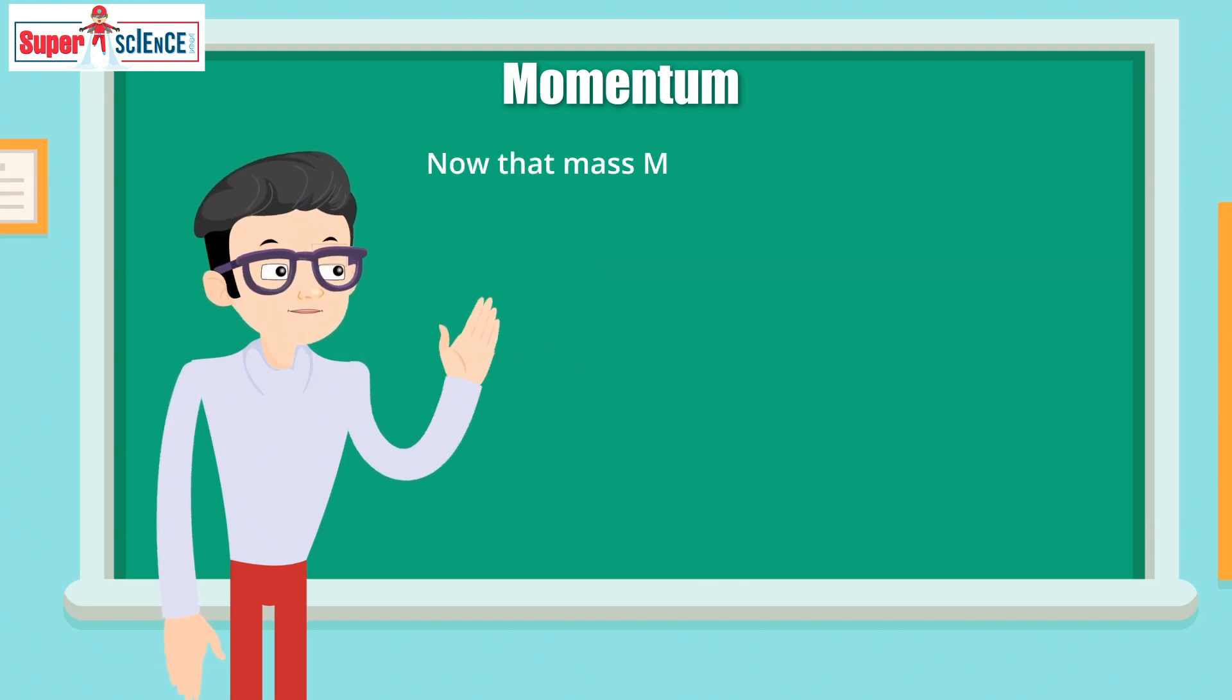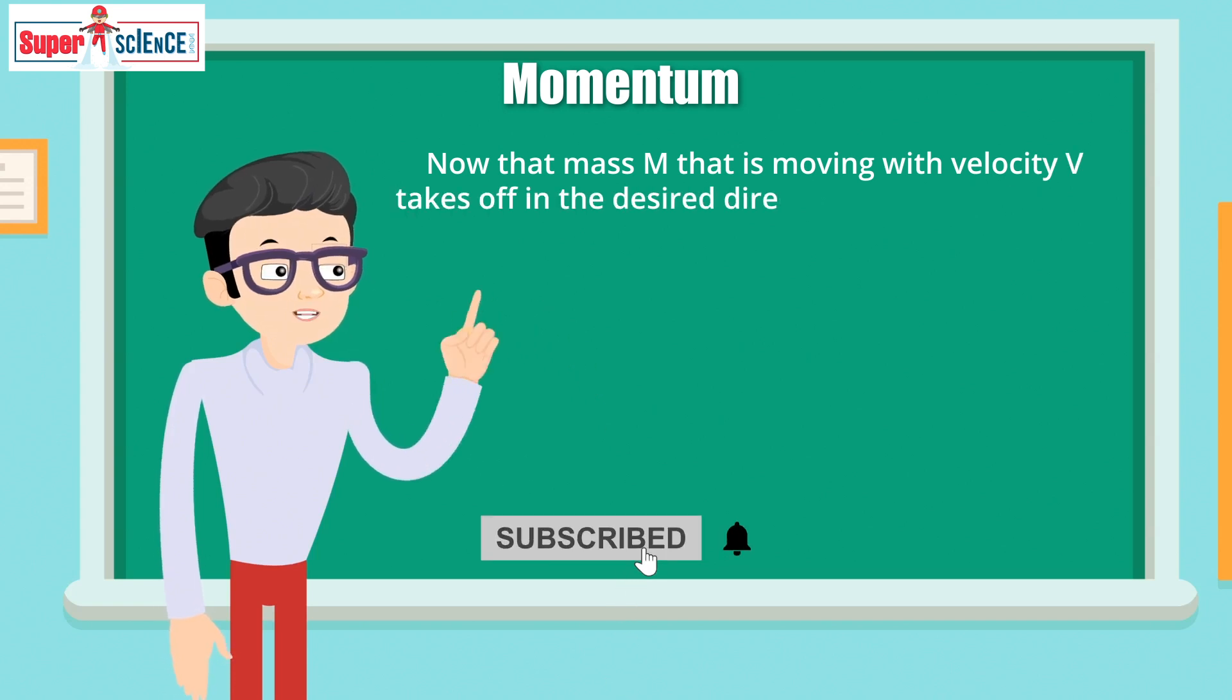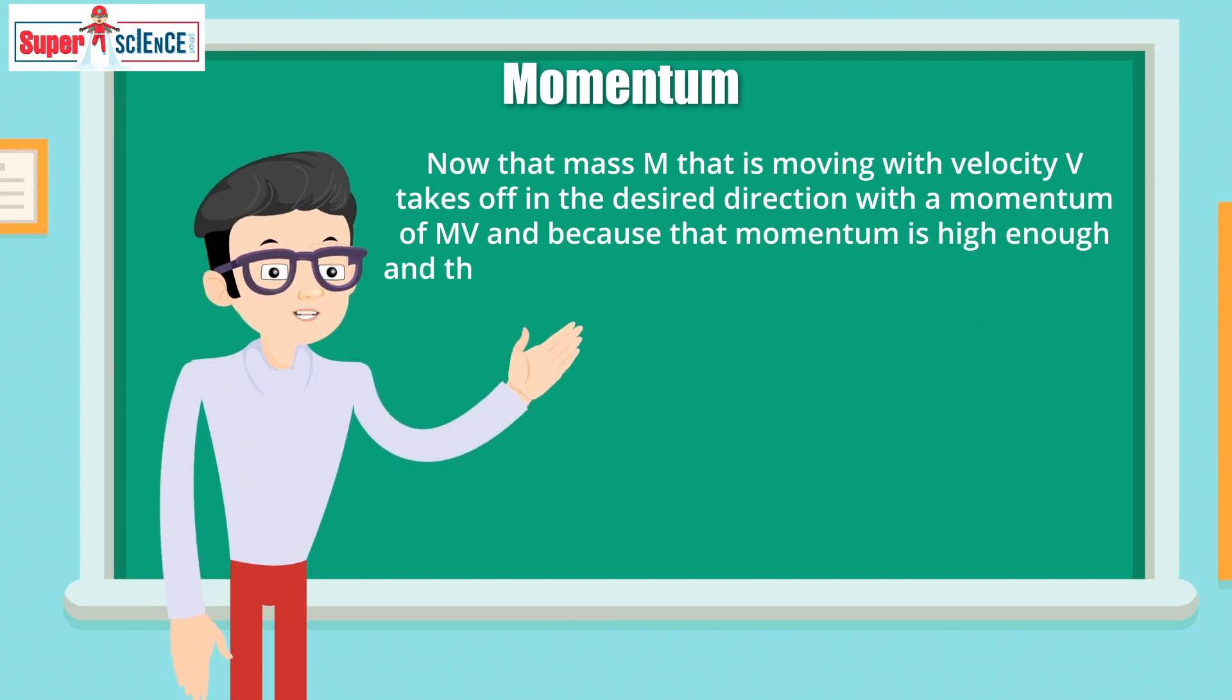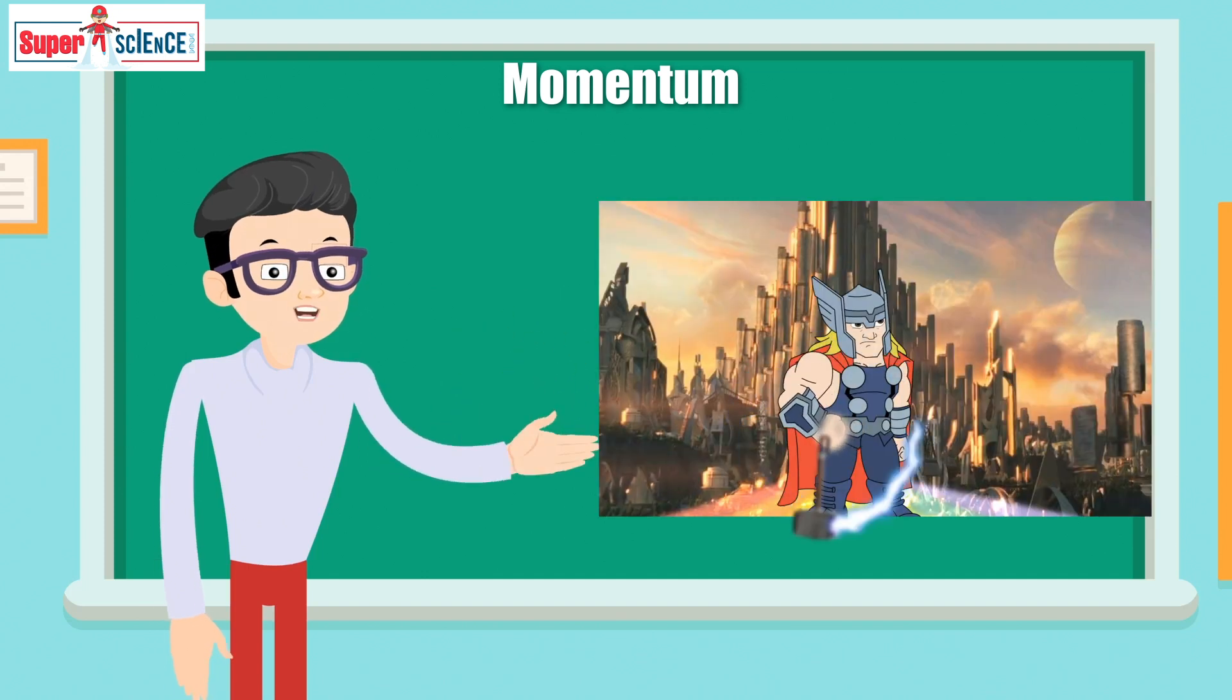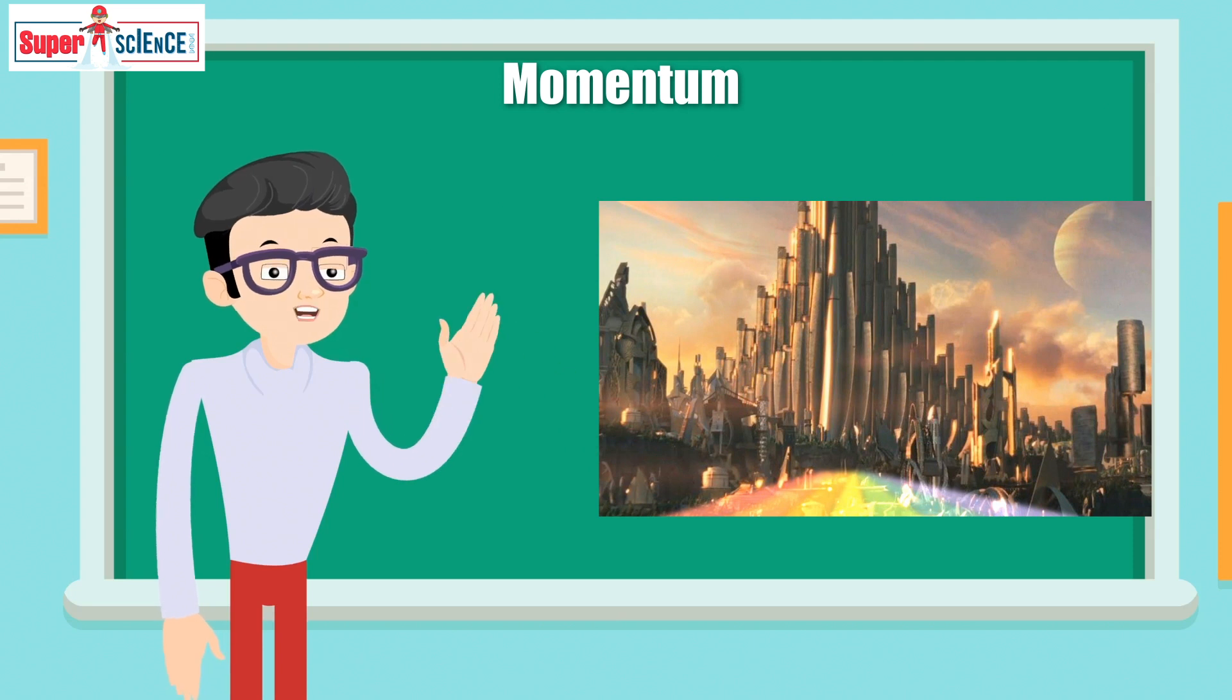Now that mass M is moving with velocity V, it takes off in the desired direction with a momentum of capital M multiplied by capital V. And because the momentum is high enough and Thor is attached to the mass because of the strap, the momentum extends to him as well, and he gets a massive boost to start flying solely through the power of momentum.